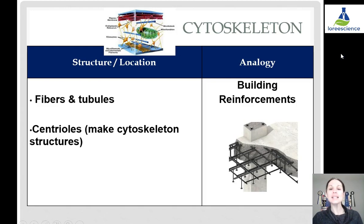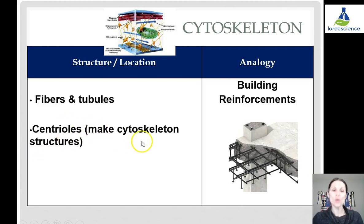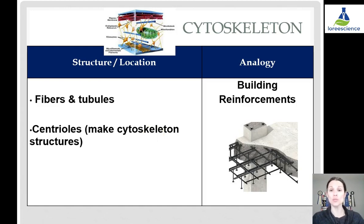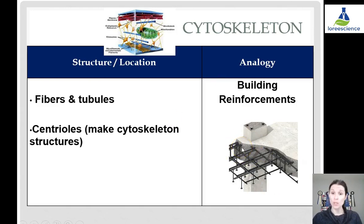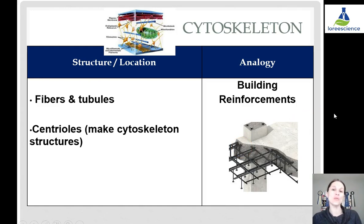Lastly, the cytoskeleton is a series or network of fibers and tubules. A specific type called centrioles make cytoskeleton structures such as spindle fibers, tubules, or other things that allow for movement. We can think of them like building reinforcements — they help the structure and the movement of that company.